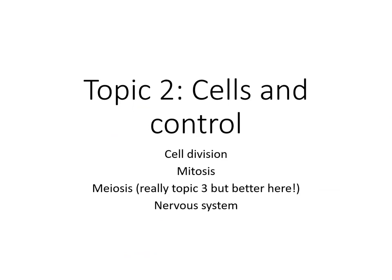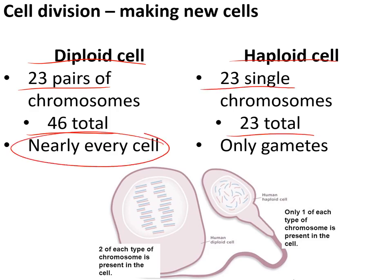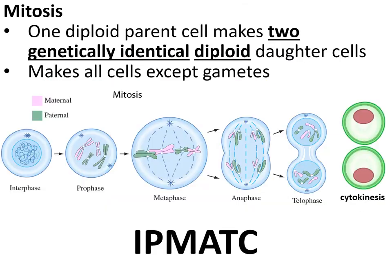Topic two: cells and control. Cell division is the process of making new cells. Cells can be diploid with 23 pairs of chromosomes (46 total), or haploid with 23 single chromosomes. Nearly every cell in your body is diploid; the only haploid ones are your sperm and eggs.